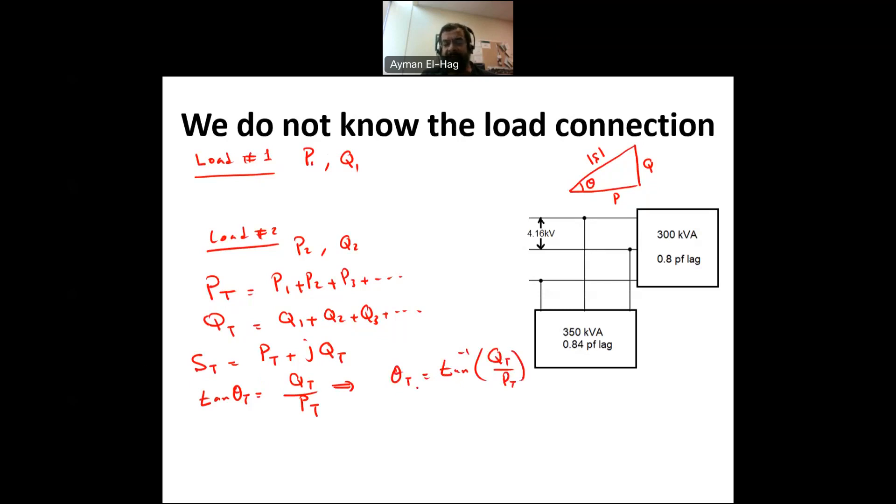And then take the cosine of theta total, you will get the power factor. If you are asked what is the total line current, you can find S total as an apparent power magnitude, which is Pt squared plus Qt squared.